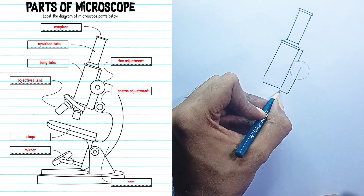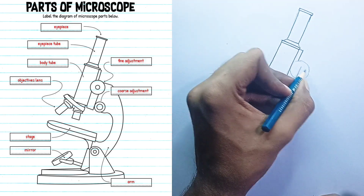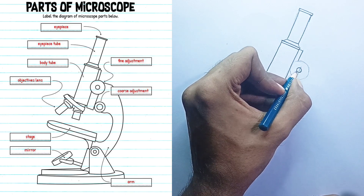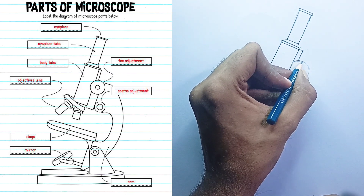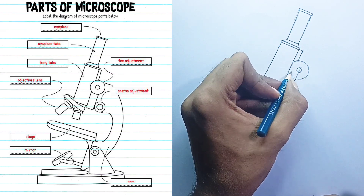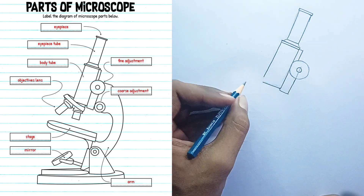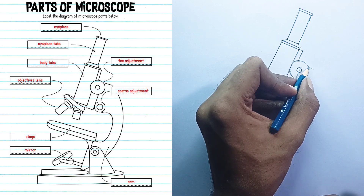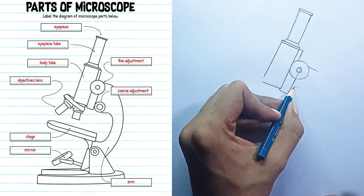Coarse adjustment: this is a large, typically outer knob used for making large, rapid adjustments to the focus. It moves the stage, or the body tube, up and down quickly. It's used for initial focusing, especially with low-power objective lenses, to bring the specimen into approximate focus.